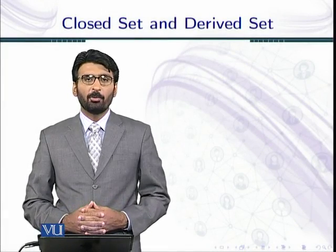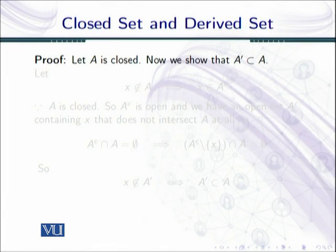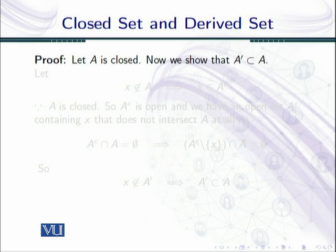Let us start the proof of our theorem. Let A be a closed set. Now we have to show that the derived set of A is a subset of A. For this, we will take an element from the complement of A and then we will show that this element is in the complement of the derived set.